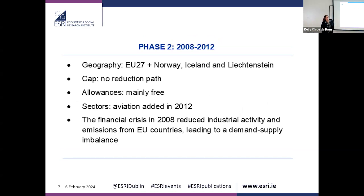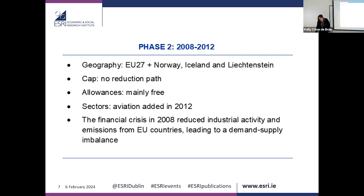Phase two ran from 2008 to 2012. Norway, Ireland, and Liechtenstein joined. There was still no reduction cap, allowances were mainly free — about 90% — and aviation was added in 2012. In 2008, the great financial crisis reduced production, which reduced demand for emission allowances, again leading to a very low price.